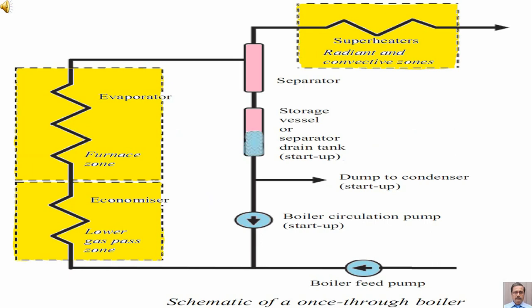Here is a schematic of a once-through boiler. We have the boiler feed pump, economizer, evaporator, and separator.